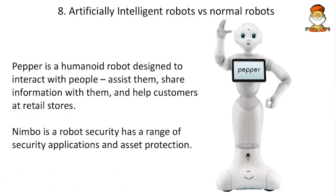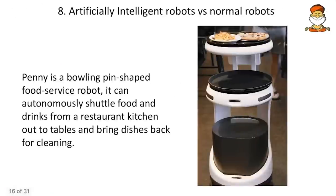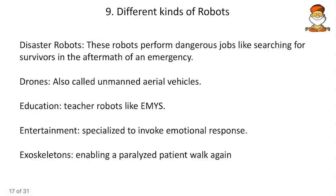Pepper is a humanoid robot designed to interact with people, assist them, share information, and help customers find products in retail stores. Nimbo is a security guard robot with various security applications including night vision technology. Penny is a bowling-pin-shaped food service robot that takes food from the kitchen, serves it to customers, and brings back used plates. These are some of the AI robots currently in vogue in the market.